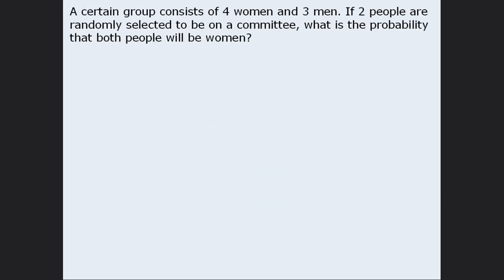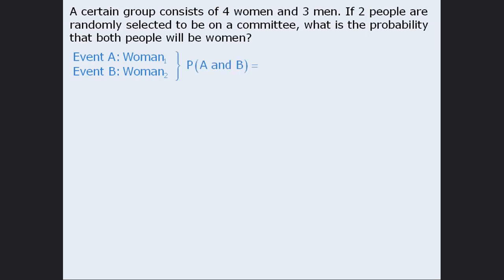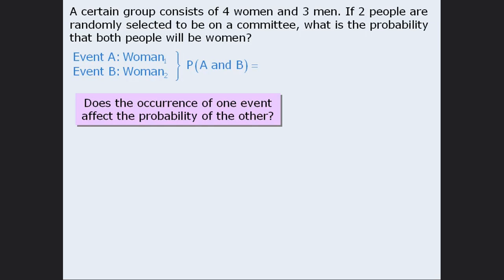Now let's examine a different question. Here we are selecting two people from a group, and we want to find the probability that both selected people will be women. We define event A as selecting a woman on the first selection, and event B as selecting a woman on the second selection. To determine whether these events are dependent or independent, we ask: does the occurrence of one event affect the probability of the other? In other words, if a woman is selected on the first selection, will this affect the probability of selecting a woman on the second selection?